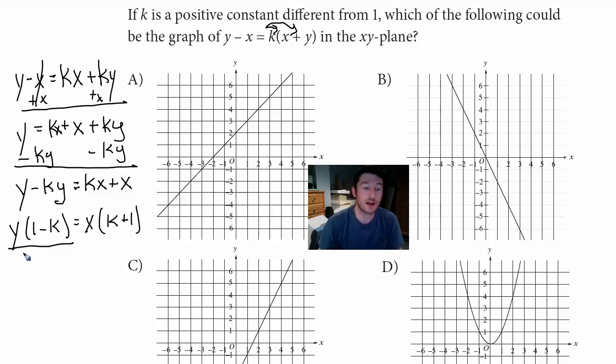So I'm going to divide out 1 minus k. Let's do that. Divide out 1 minus k. That crosses out and we get y equals. I'm going to put all this stuff on the left though. So k plus 1 all over 1 minus k in parentheses times x.